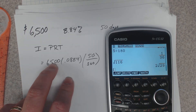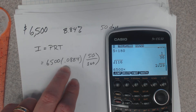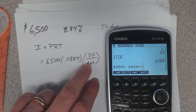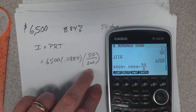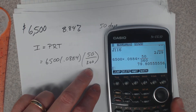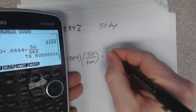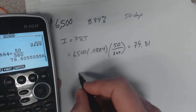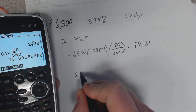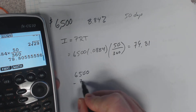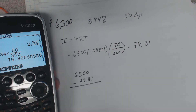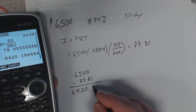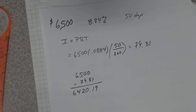So: 6,500 times 0.0884 times 50 over 360 equals $79.81. The bank is not going to give you the full $6,500. They take the $6,500 and subtract that interest of $79.81, leaving you with $6,420.19. That's how much you walk out of the bank with.